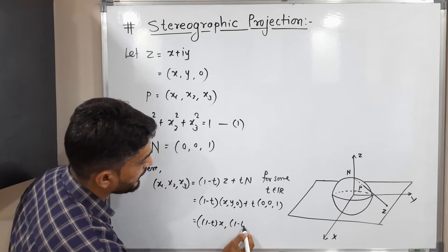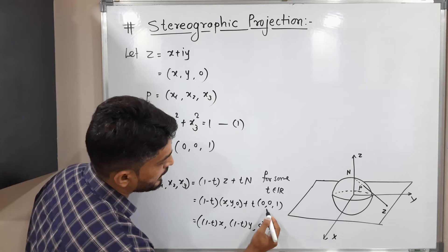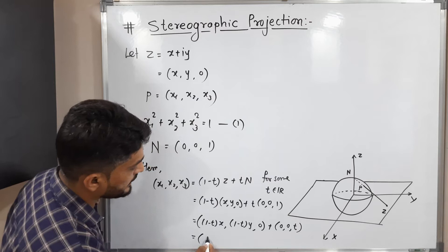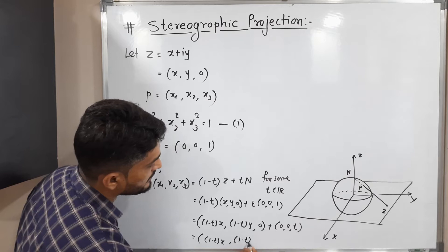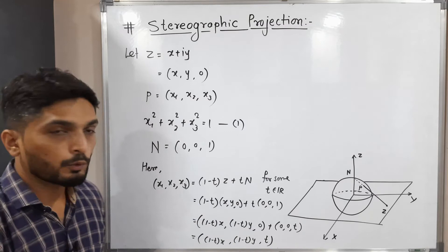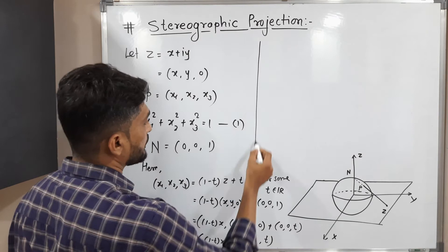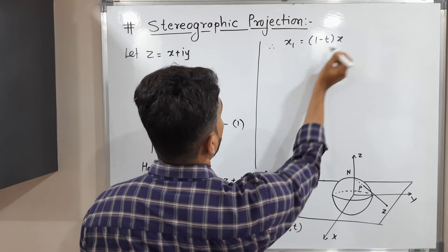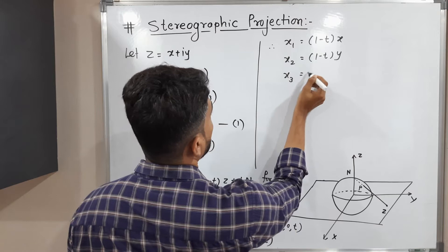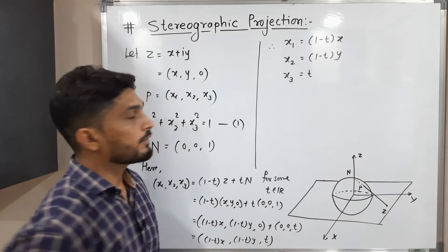Simplifying by multiplying out: we get ((1−t)x, (1−t)y, (1−t)·0) plus (0, 0, t), which gives us ((1−t)x, (1−t)y, t). Equating components: x₁ = (1−t)x, x₂ = (1−t)y, and x₃ = t. We call this equation number two. Our target now is to find the value of t.